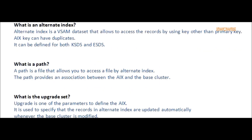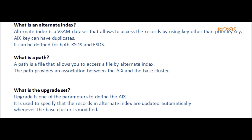Question: What is an alternate index? Answer: An alternate index is a VSAM data set that allows access to records by using a key other than the primary key. Alternate index key can have duplicates. It can be defined for both KSDS and ESDS.